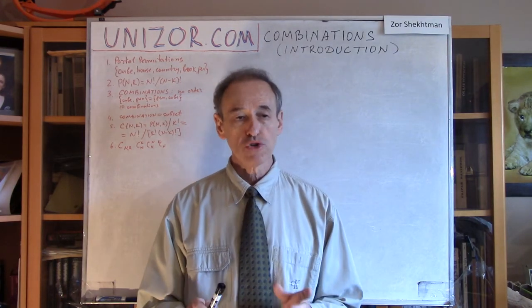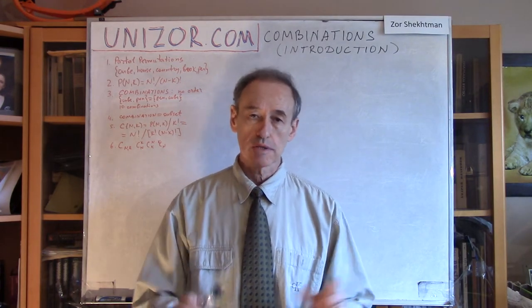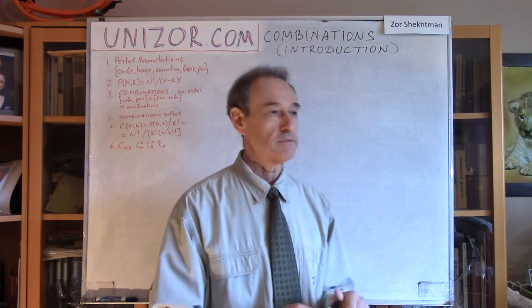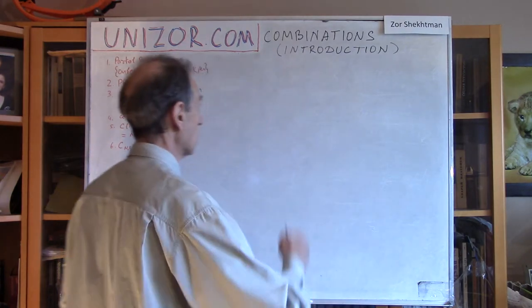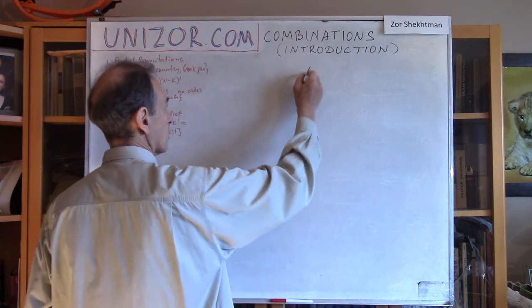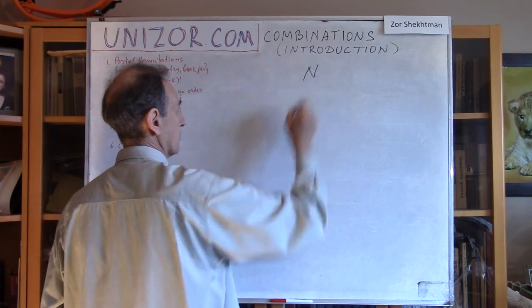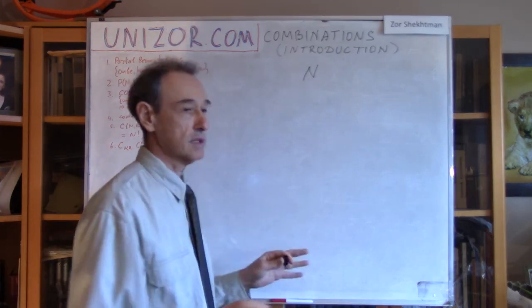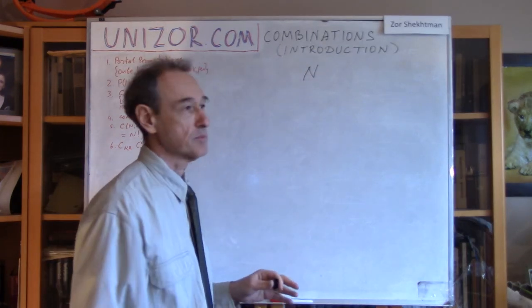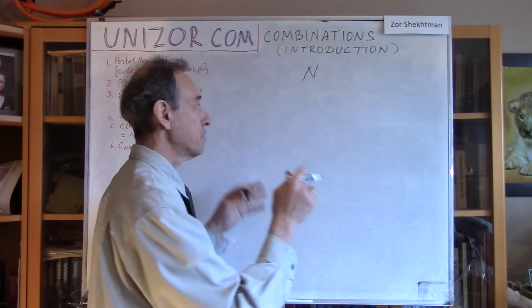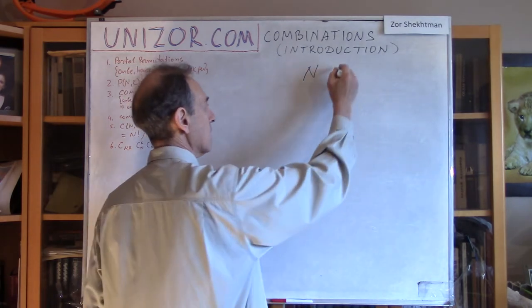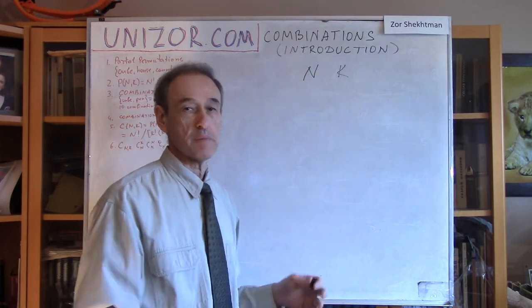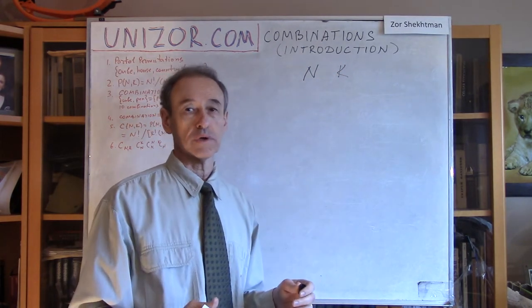Partial permutations — let me just remind you — is when you have n different objects. We're talking about different objects only. You have n different objects, and you have to pick k out of these n and put them in a certain order.